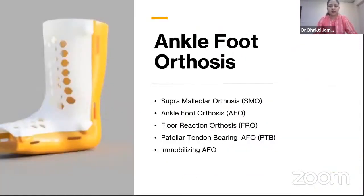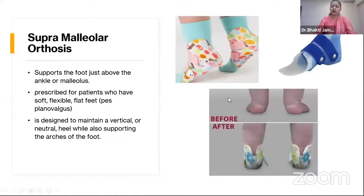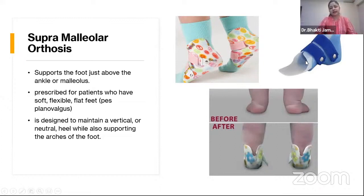The ankle foot orthosis category includes supra malleolar orthosis, ankle foot orthosis, floor reaction orthosis (FRO), patella tendon bearing orthosis (PTB AFO), and immobilizing AFO. Supra malleolar orthosis holds the ankle just above the level of the malleoli. It is specifically prescribed for planovalgus foot, flexible flat foot, or dynamic flat foot in kids. It can be in-socket with an inner and outer SMO for more rigid support, and is designed to keep the heel and ankle in neutral position to support flat foot in children.